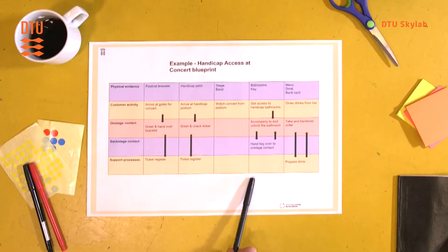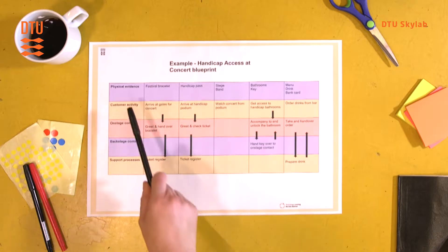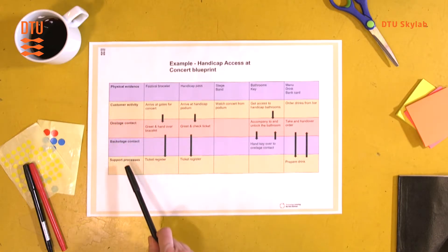When you're filling in the template for the service blueprint, you need to fill in these five different levels of information.